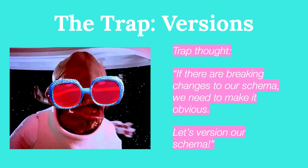Our next trap is versions. A trap thought might be: if there are breaking changes to our schema, we need to make it obvious, so let's just version our schema — the whole schema. In GraphQL, if you version your entire schema, you have multiple schemas, and each schema you support brings maintenance overhead. Fields are the unit of compatibility, not endpoints and not schemas. So if you want to change the name of a field or the type it returns, you just add a new field and deprecate the old one.